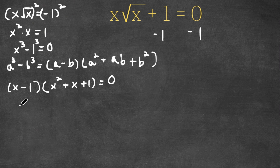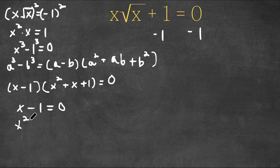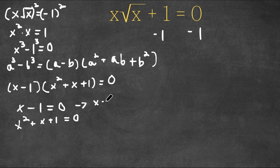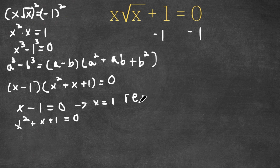This gives us two equations. We have x minus one is equal to zero, and x squared plus x plus one is equal to zero. For x minus one equals zero, this means that x is equal to one. However, if we plug in x equals one, we get one times the square root of one, which is simply one, plus one is equal to zero. Well, one plus one is two, so two is not equal to zero. So this is actually rejected — this does not work.